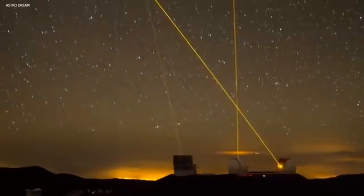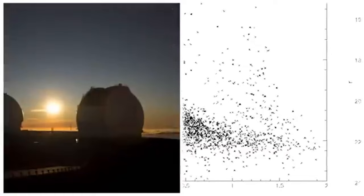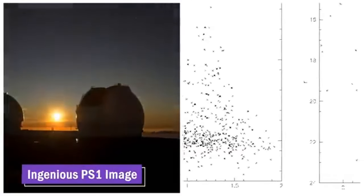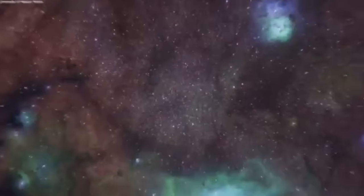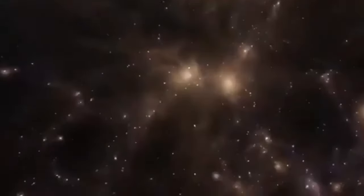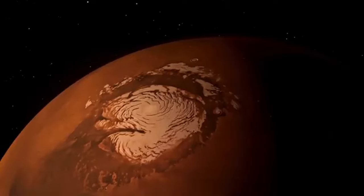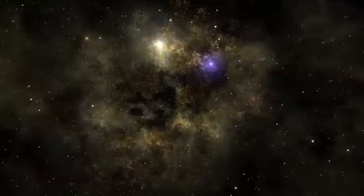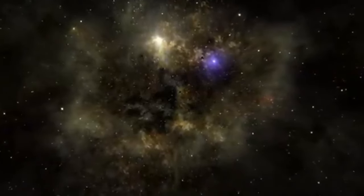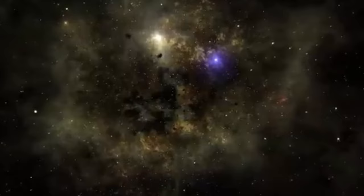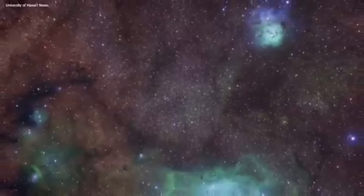As researchers meticulously analyzed the data, they were captivated by Oumuamua's rotational behavior. The object exhibited a rapid rotation rate, completing a full spin every 7.3 hours. This fast rotation, coupled with its elongated shape, defied conventional expectations and posed intriguing questions about its origin and internal structure. The precise measurements provided by the VLT's sophisticated instruments allowed scientists to delve deeper into the dynamics of Oumuamua, shedding light on the forces that shaped its unique form.